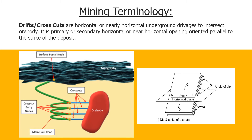Drifts or cross cuts are horizontal or nearly horizontal underground driveages to intersect the ore body. It is a primary or secondary horizontal or near-horizontal opening oriented parallel to the strike of the deposit. Basically, they are driveages made from the main levels to the ore body, essentially perpendicular to the ore body.